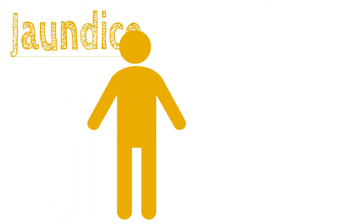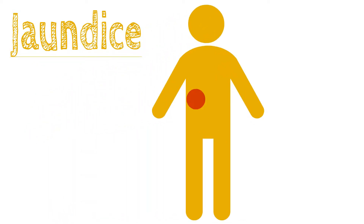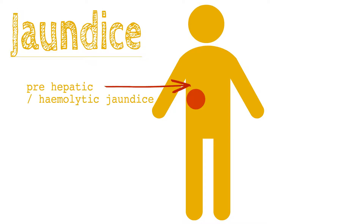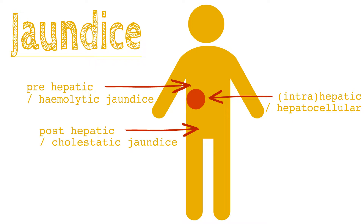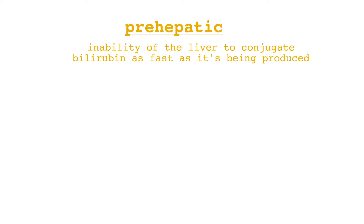Jaundice can be classified according to which part of the physiological mechanism the pathology is affecting. If the pathology is occurring before the liver, it is pre-hepatic or hemolytic jaundice. If the pathology is located within the liver, it is hepatic or hepatocellular jaundice. If the pathology is located after bilirubin has conjugated in the liver, it is post-hepatic or cholestatic jaundice.